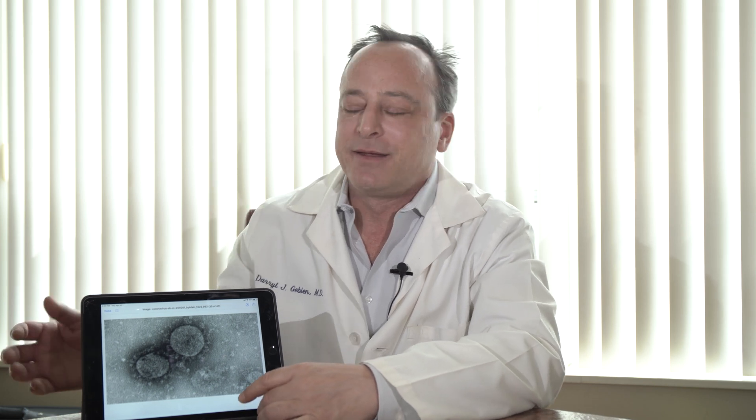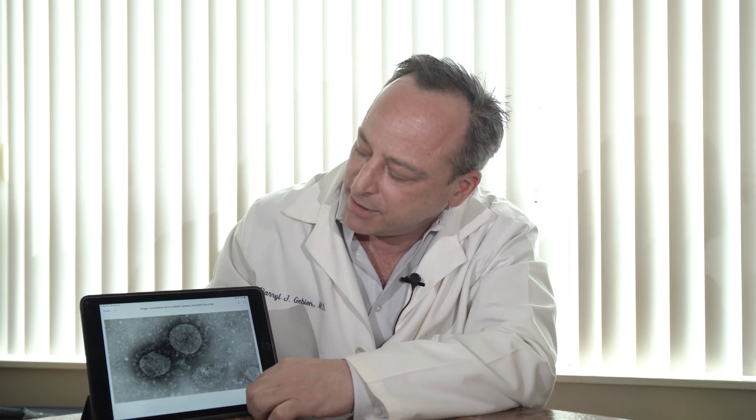Corona beer just got its name from that. Coronavirus, when you look at it under an electron microscope, you can see that there is a haze — a dark haze around the virus particle. Those are glycoproteins: a denser material that doesn't reflect electrons as well as the inside of the cell, so it looks darker.